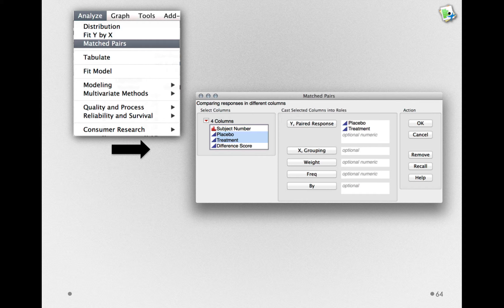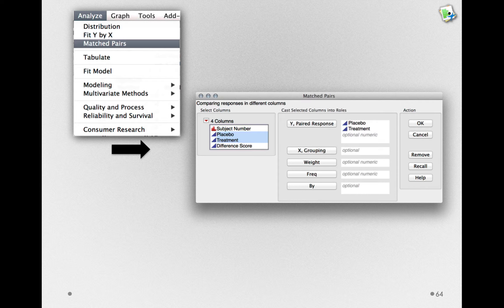The matched pairs platform is specifically suited to looking at pre and post changes. In this case, we put the paired responses as separate columns in the Y role. We put placebo and treatment as both the Y paired response.